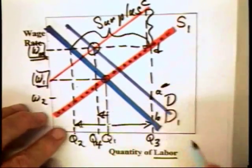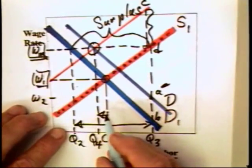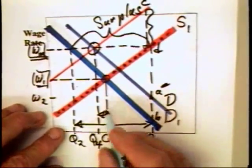In other words, the conventional analysis says that the minimum wage reduces employment this much. This kind of analysis says minimum wage has reduced employment by that amount, a much smaller amount.